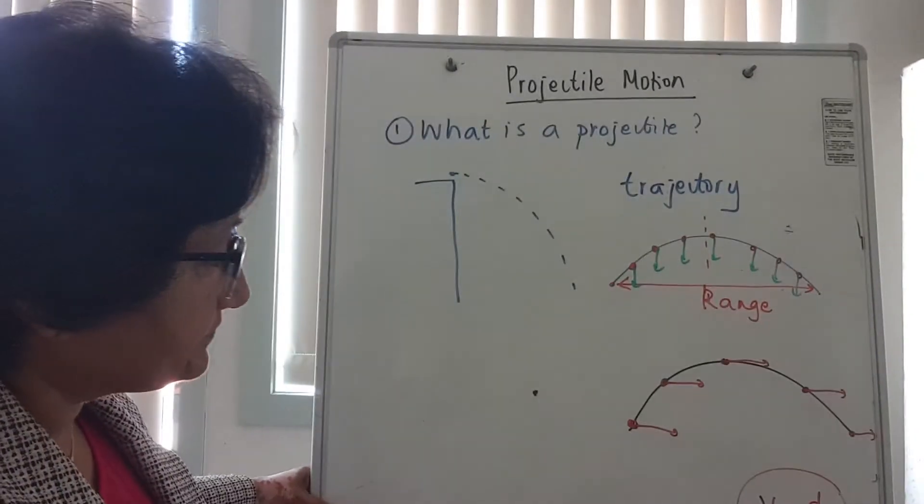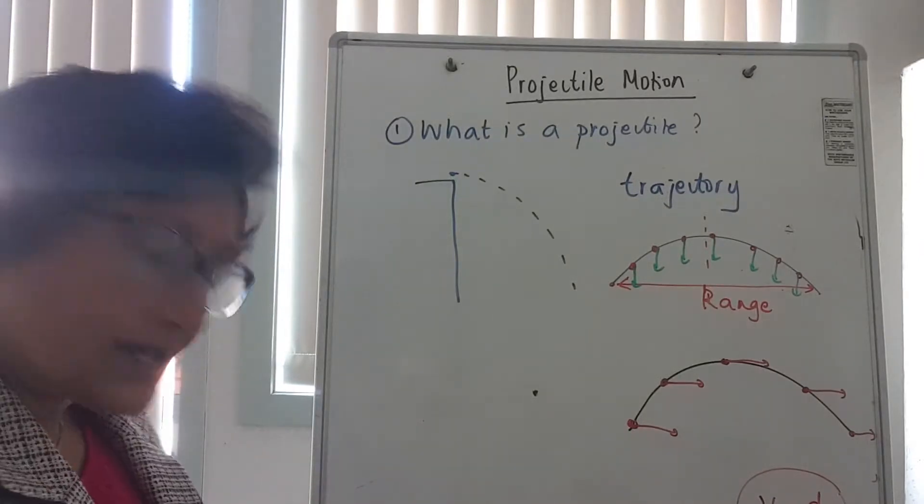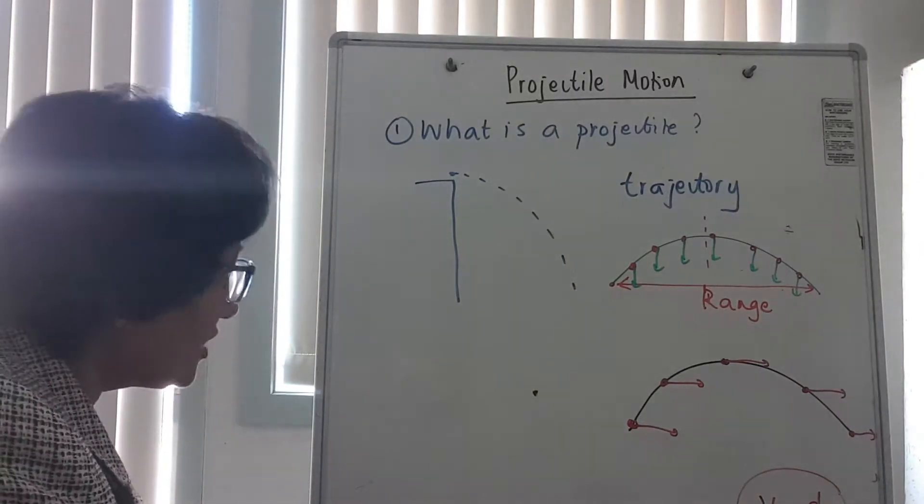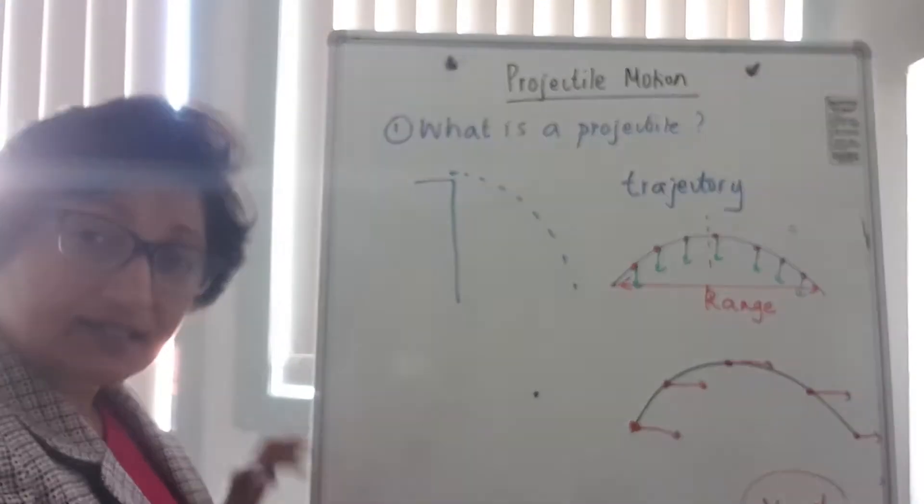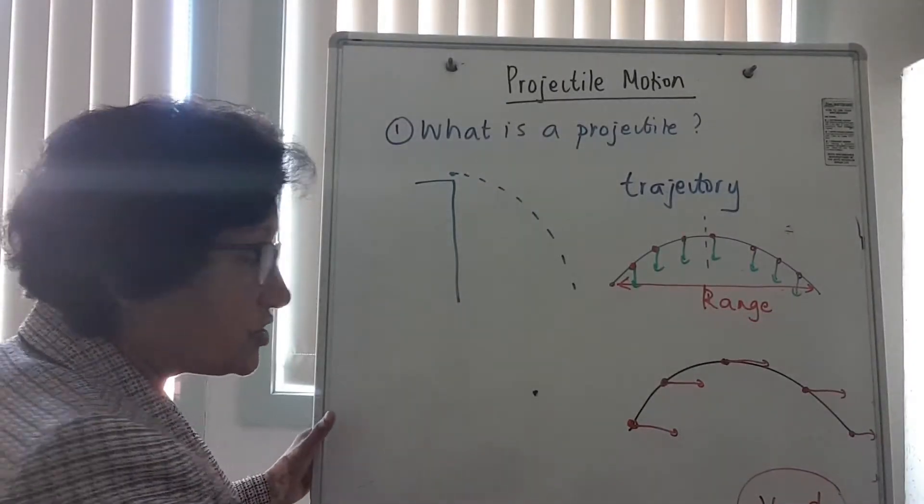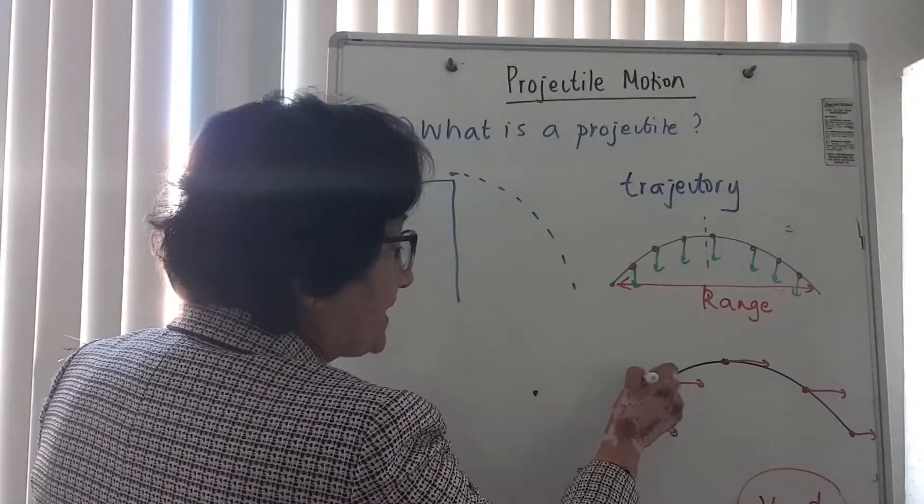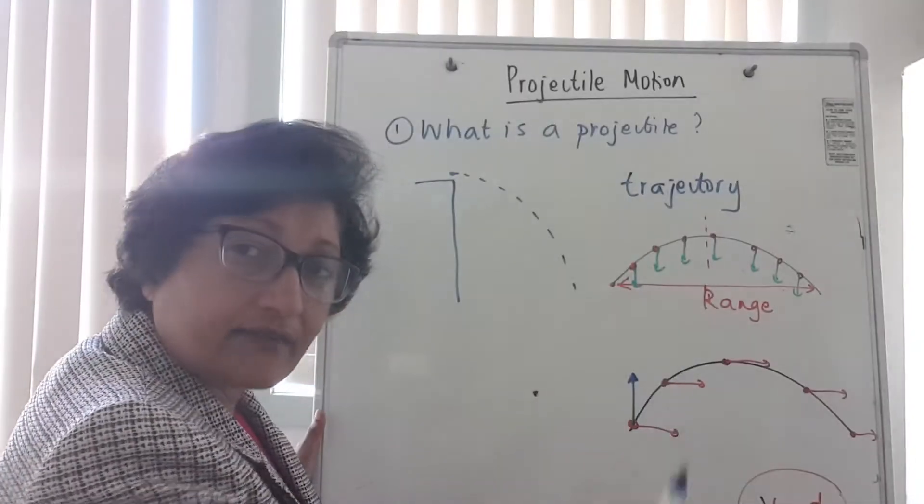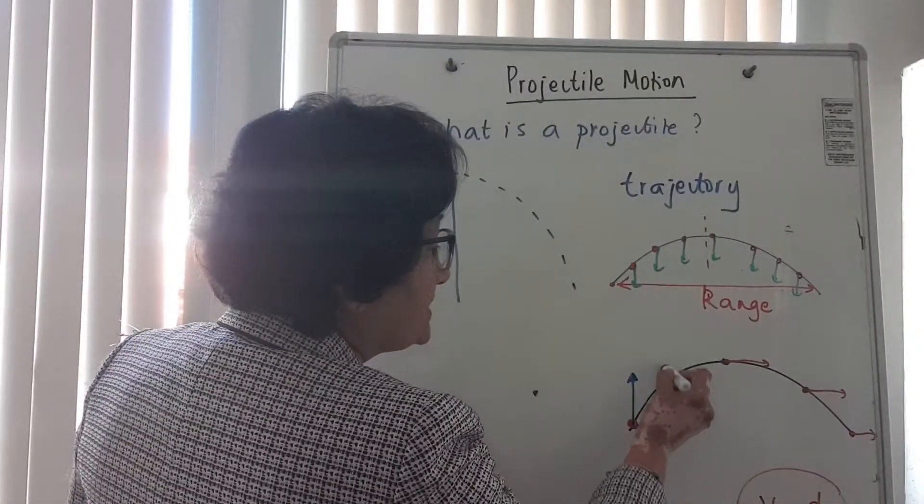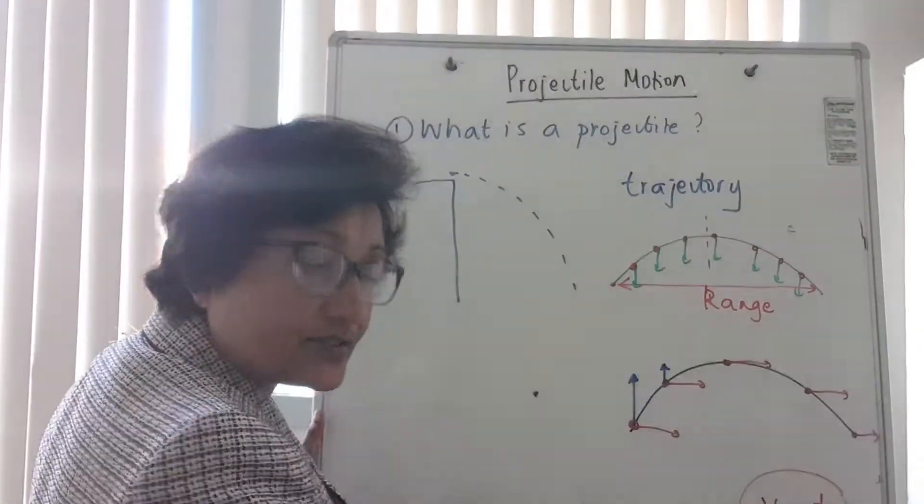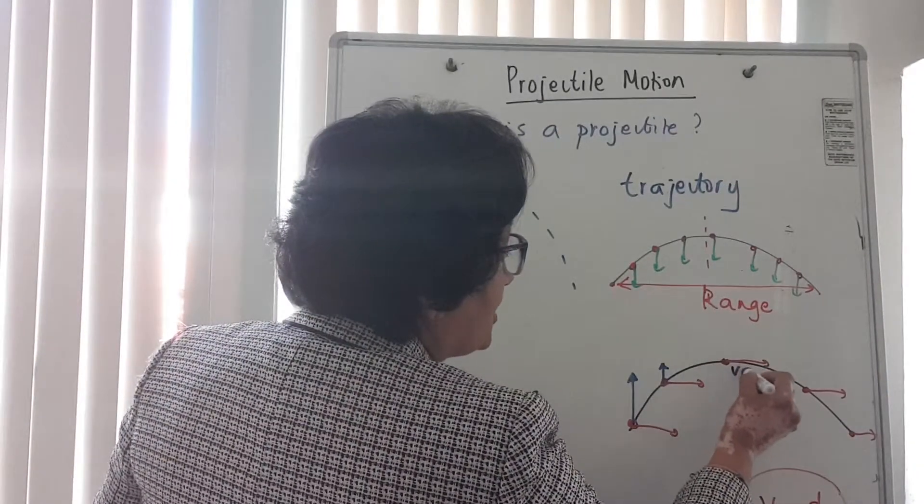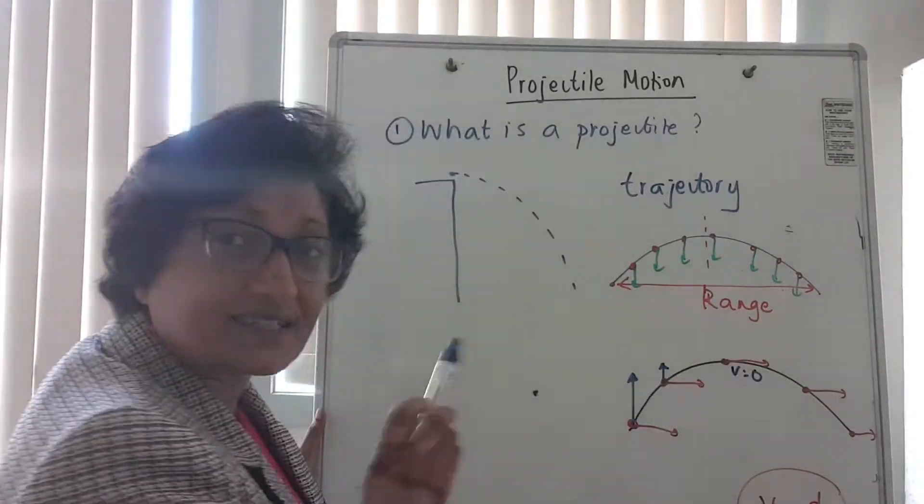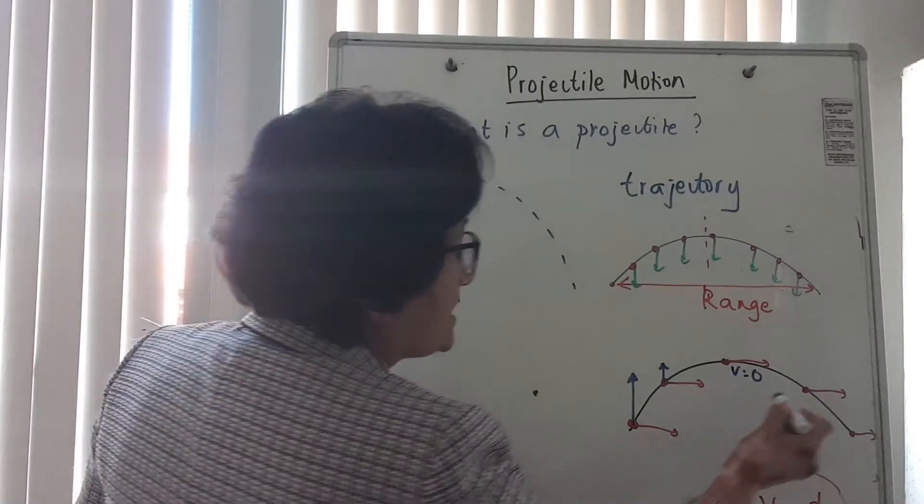However, if I look at the vertical velocity, what does that look like? The instant you throw, the instant it leaves your hand, velocity is a maximum. And because gravity is pulling it down, the size of that velocity decreases and your vertical velocity becomes zero at the top. It still has horizontal velocity.